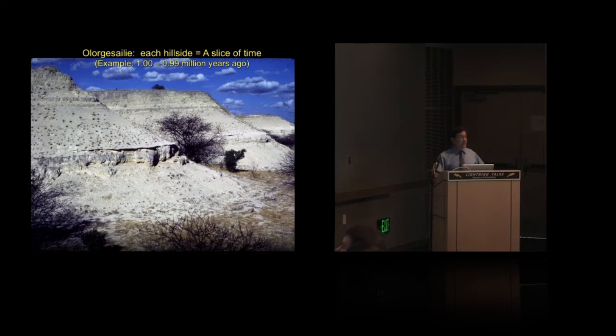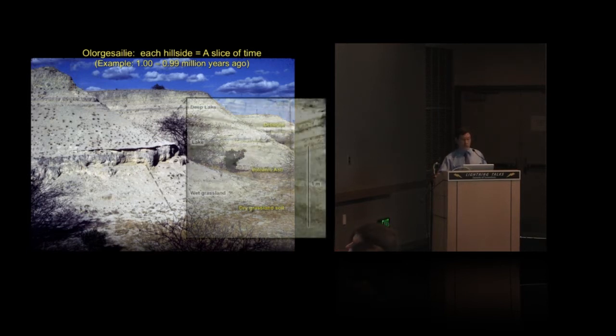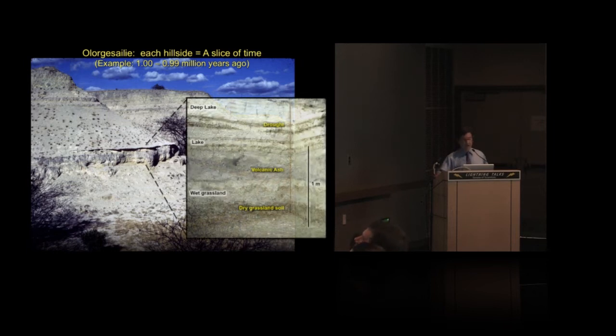Twenty-five years ago, I walked up this hillside and it changed my research career. Each hillside is a slice of time. These particular layers are about one million years old. Let's just take about a 2,000-year time slice in that hillside. What you can see is the back-and-forth nature of changing climates between wet and dry. This made me wonder whether, in fact...